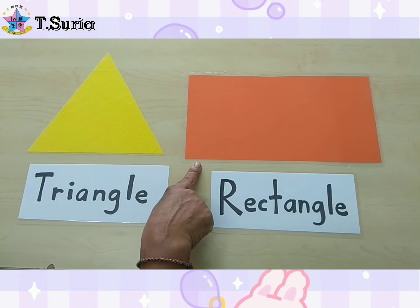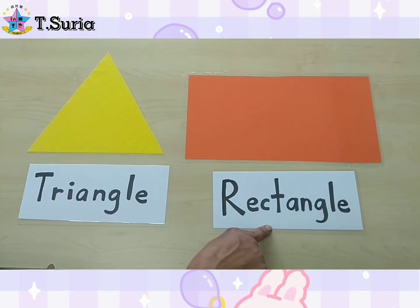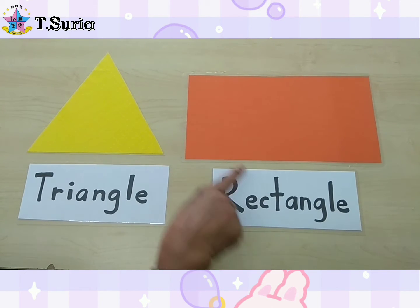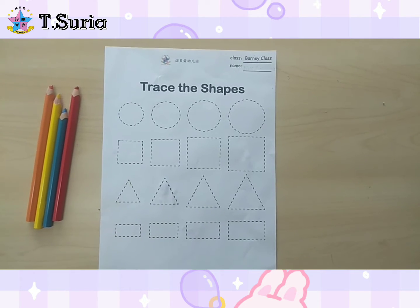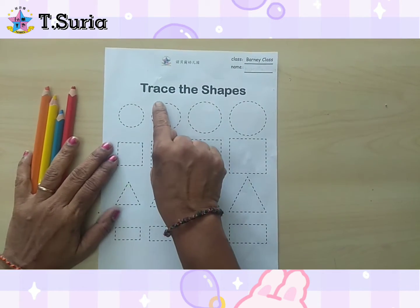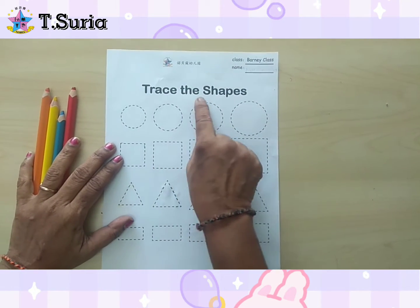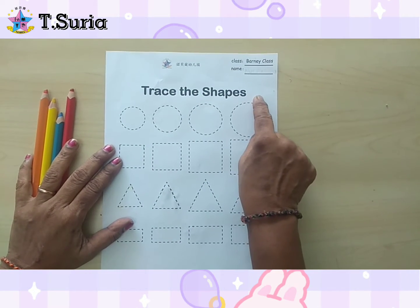This shape is rectangle. Rectangle! Come, children, we do some activity about shapes. Trace the shapes.